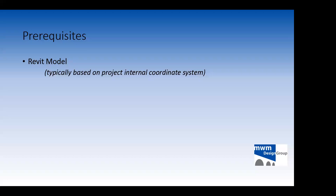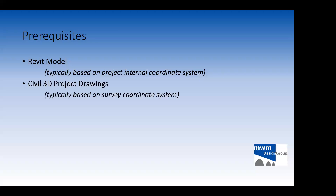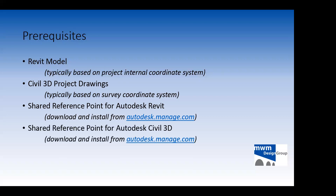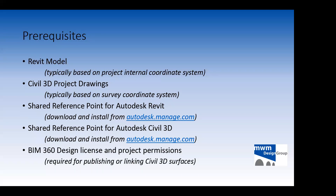I have a Revit model based on project internal coordinate system, and Civil 3D project drawings based on survey coordinates. I've installed the shared reference point for Autodesk Revit, which you can download from the autodesk.manage.com website, and also the shared reference point for Autodesk Civil 3D. For sharing surfaces through BIM 360, you will need a BIM 360 design license and permissions for a BIM 360 project to post and access those files.